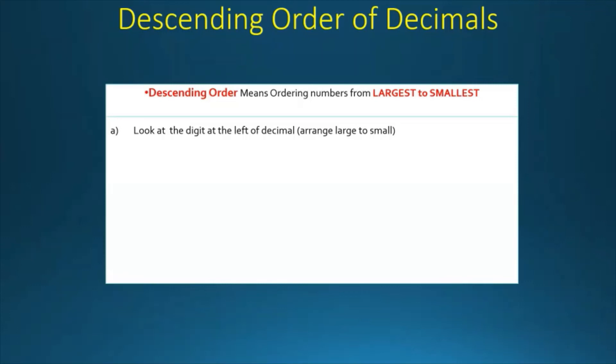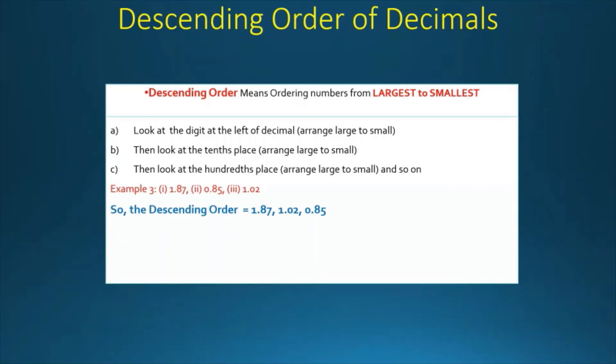So we have to first look at the left of the decimal, then tenths place, then hundredths place, and so on. The third example will be 1.87, 0.85, and 1.02. So the descending order is 1.87, 1.02, and 0.85.